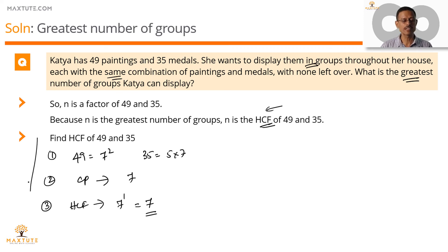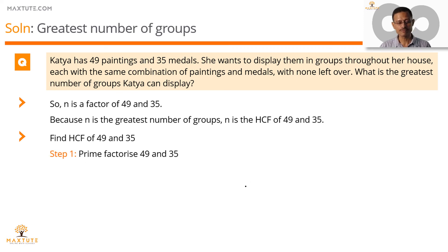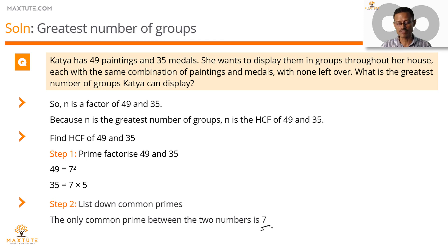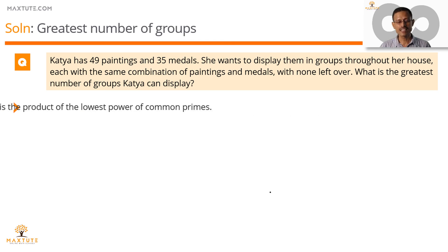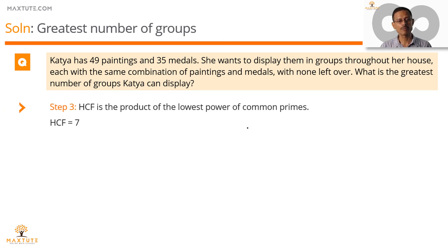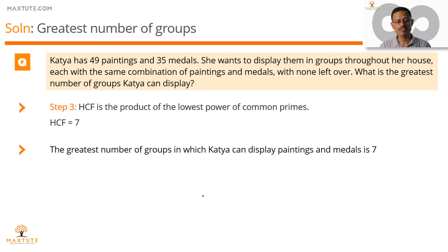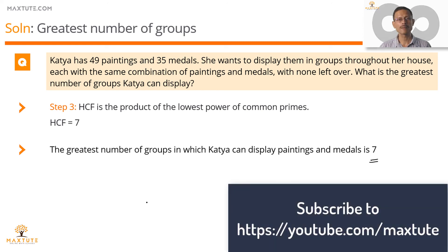To quickly sum up: prime factorize both numbers — 49 = 7², and 35 = 7 × 5. Pick the common prime: the only common prime is 7. The HCF is the product of the lowest power of common primes — 7 to the power 1 — so HCF = 7. Therefore, the greatest number of groups that Katya can display her paintings and medals in is equal to 7.